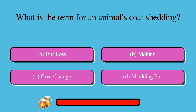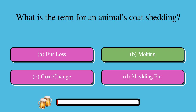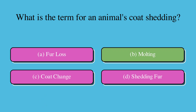What is the term for an animal's coat shedding? A. Fur loss, B. Molting, C. Coat change, or D. Shedding fur. The correct answer is B. Molting.